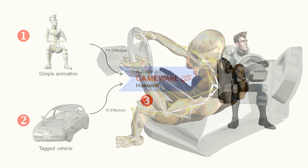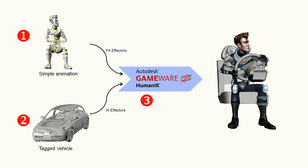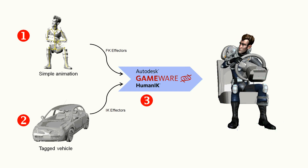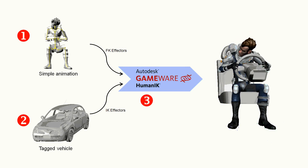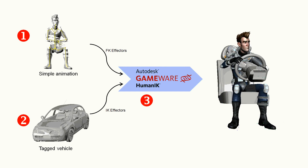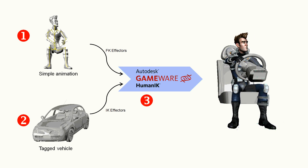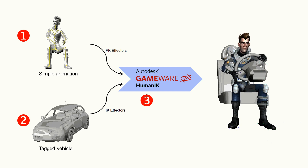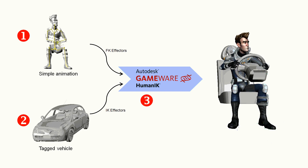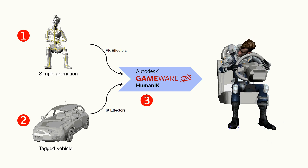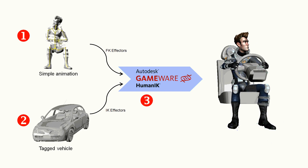To summarize, here is what we did to get there. We needed three things. First, a simple sitting FK animation. Then, a vehicle that was precisely tagged using the auxiliary effectors in MotionBuilder. Finally, the HumanIK solver is able to process these FK and IK inputs and produce a good looking output pose.